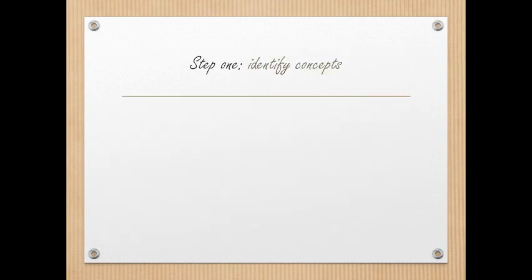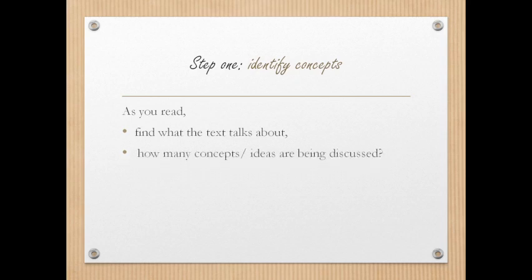The first step is to identify concepts. As you read, find what the text talks about. As we've seen in previous videos, this can be achieved by looking at the title and subtitles, and identifying how many concepts and ideas are being discussed by going through the first sentences of paragraphs.